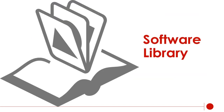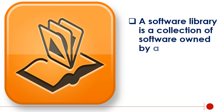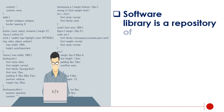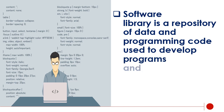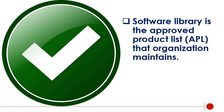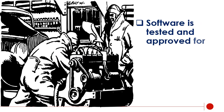Software library. A software library is a collection of software owned by a single company, and a repository of data and programming code used to develop programs and applications. The software library is the approved product list (APL) that an organization maintains. Software is tested and approved for use before being added to this list.